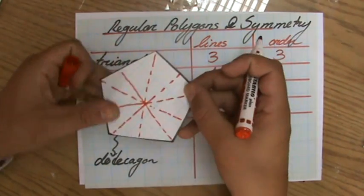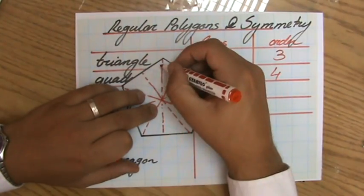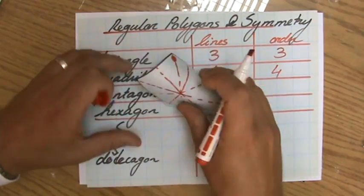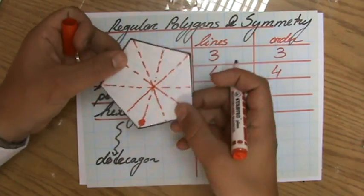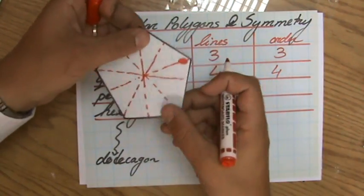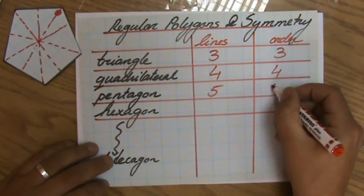What about the order? What do you think? One, two, let me just put a little dot here so that I know I started there. The dot is not there, but just so that I know that I started there. One, two, three, four, five. Order five. You see that?